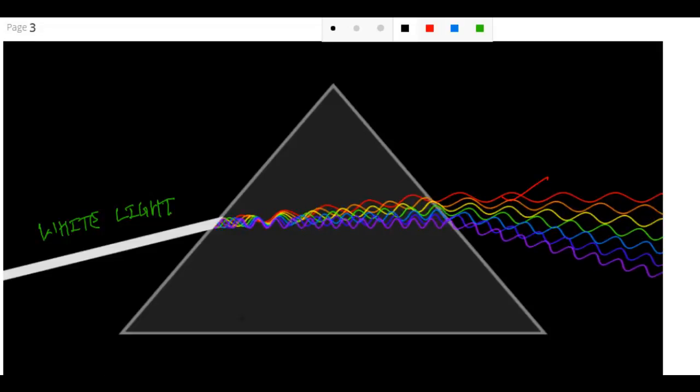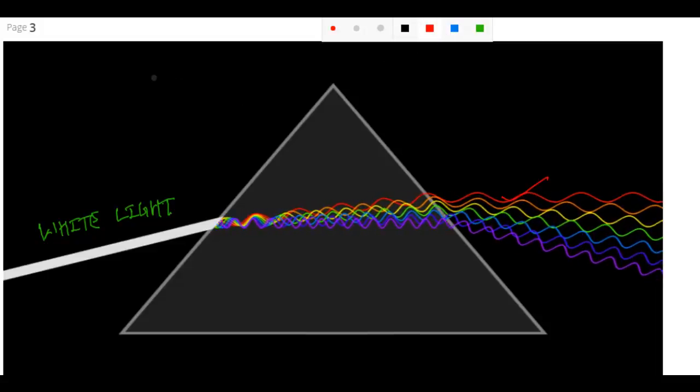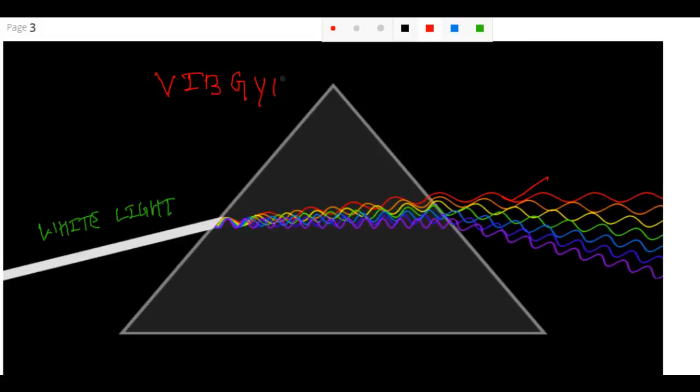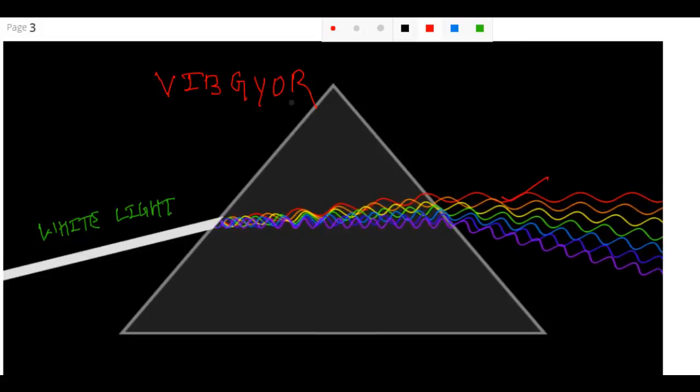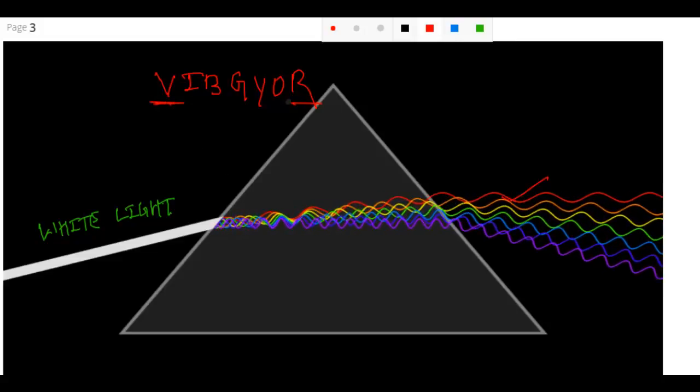If you will see the wavelength of red is maximum and the wavelength of violet is minimum.